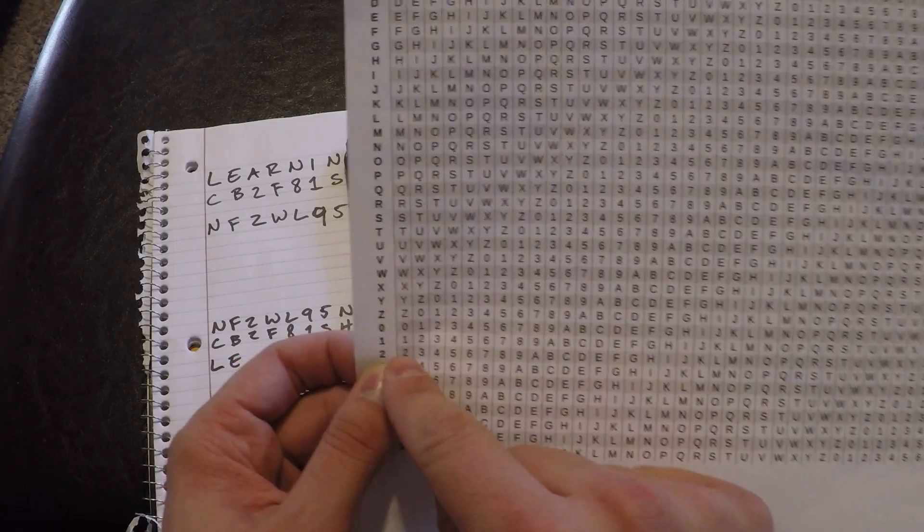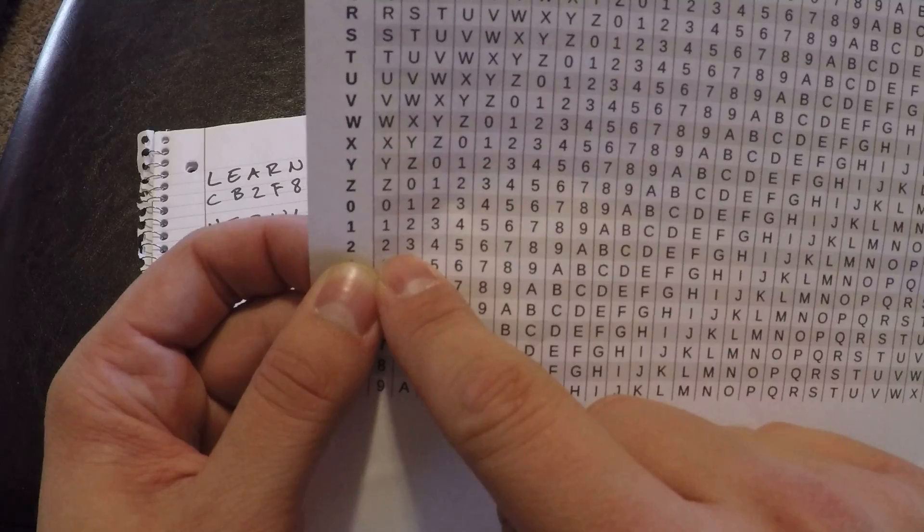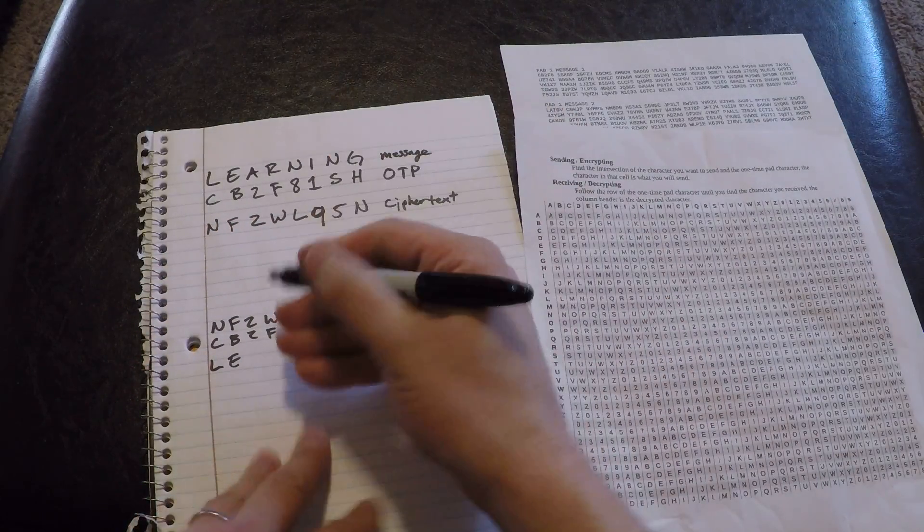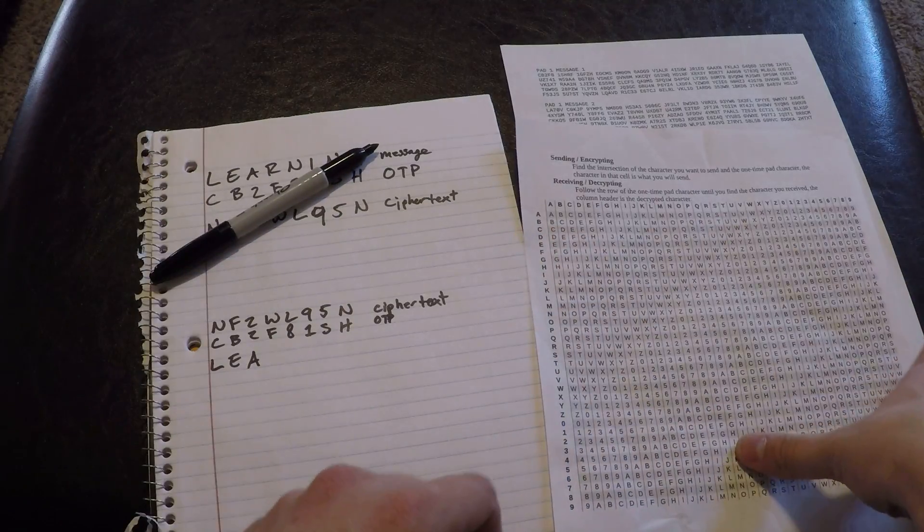Next one-time pad character is B. We start on the B row, and we go over until we find F. The column header is E. Now our one-time pad character is 2. We follow it over until we find 2, which is the first column here. First column is, of course, A. That one's special like that. That's just fine.